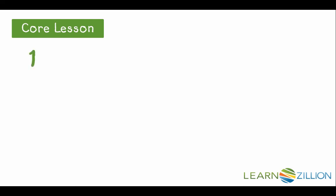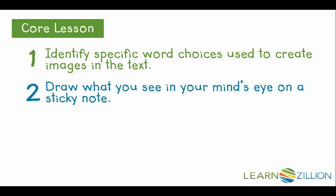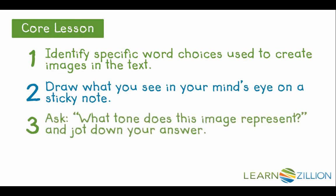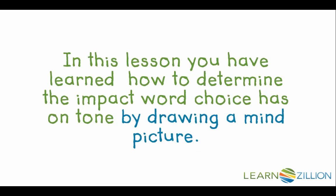So how can we determine the impact figurative language has on the tone of a story? First, identify the specific word choices that are used to create images in the text. Then, draw what you see in your mind's eye on a sticky note. Ask yourself, what tone does this image represent? And finally, ask, what am I feeling when I look at the picture? And jot down this answer as well. In this lesson, you have learned how to determine the impact word choice has on tone by drawing a mind picture.